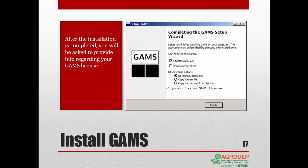After the installation is completed, you will be asked to provide the information regarding your GAMS license. Here, we will be using No License, so we'll select No License, Demo Only. If you have a license, you can click on Copy License File or Copy License Text from Clipboard, depending on your setup from earlier. Once you have selected the option that you wanted, click Finish.